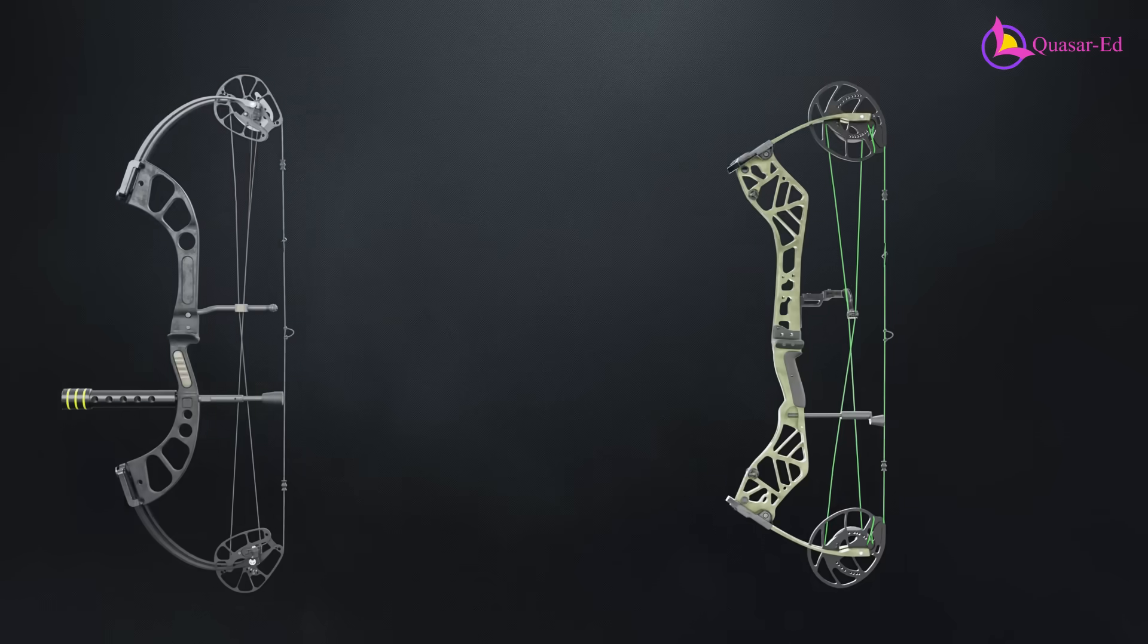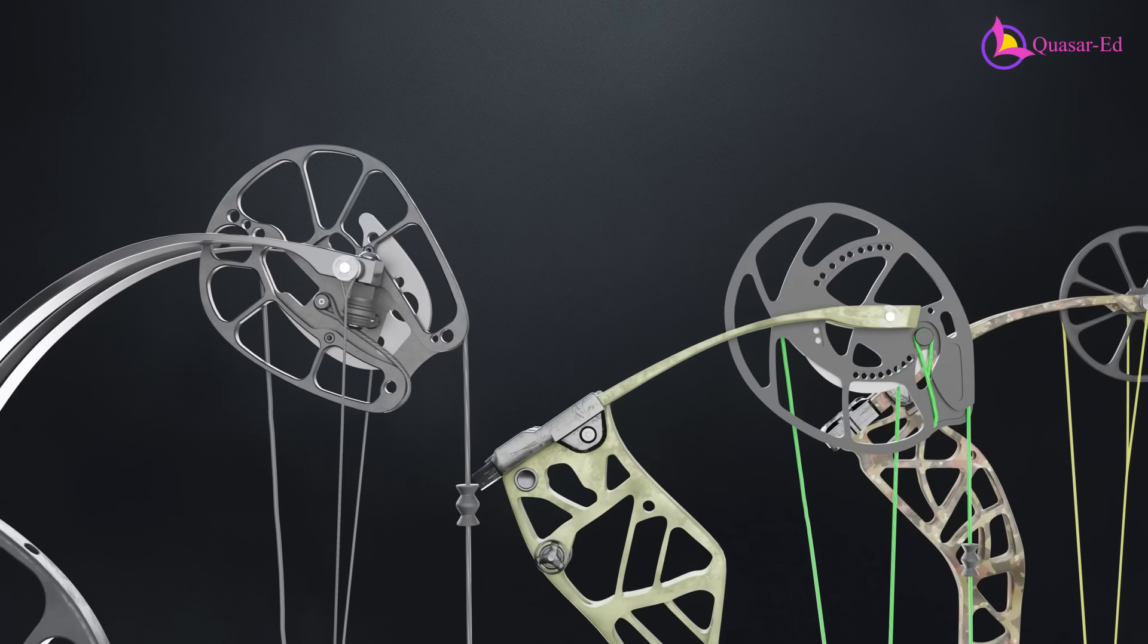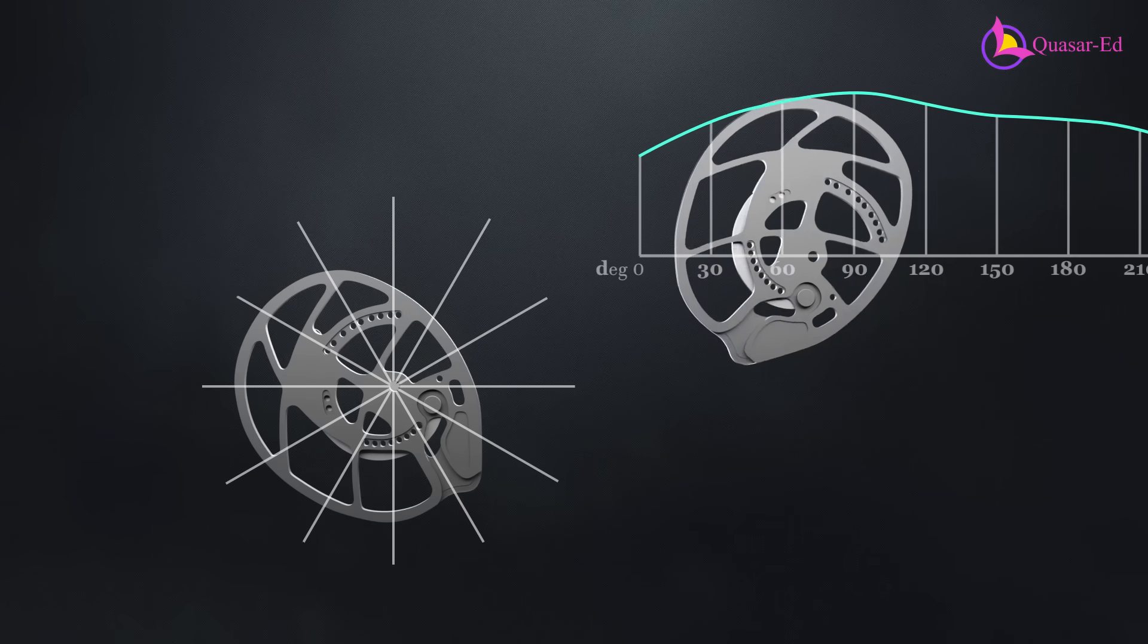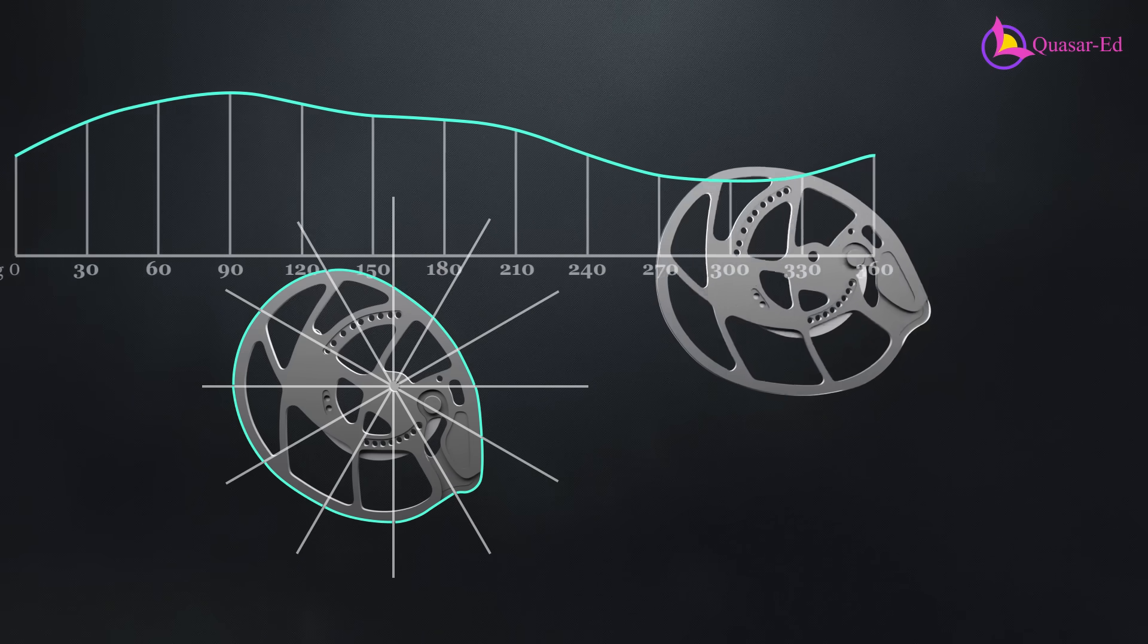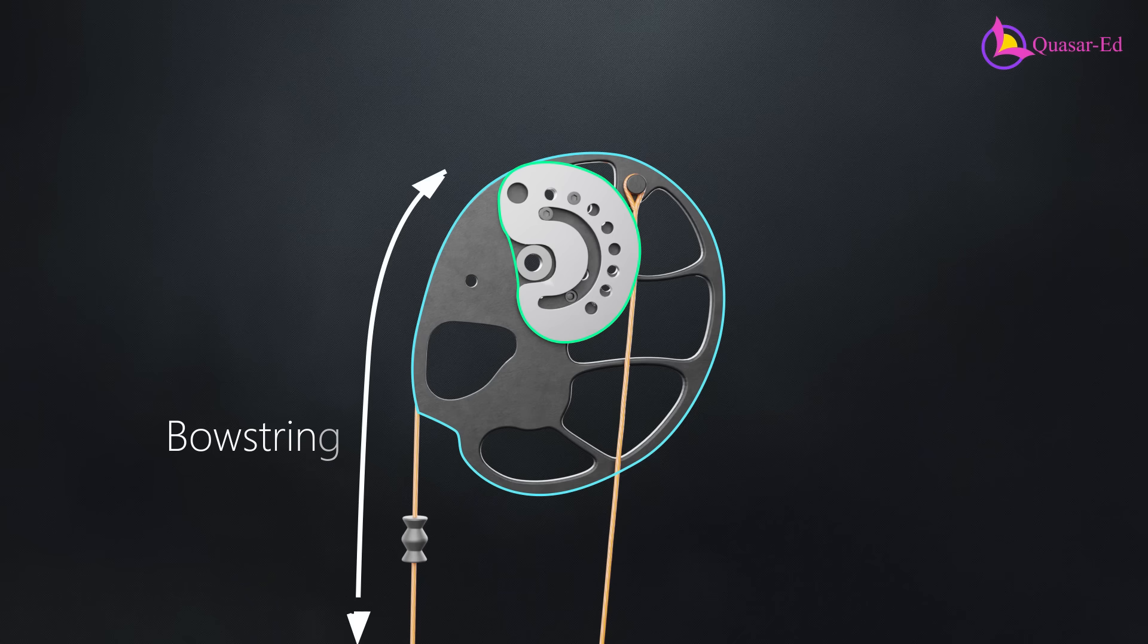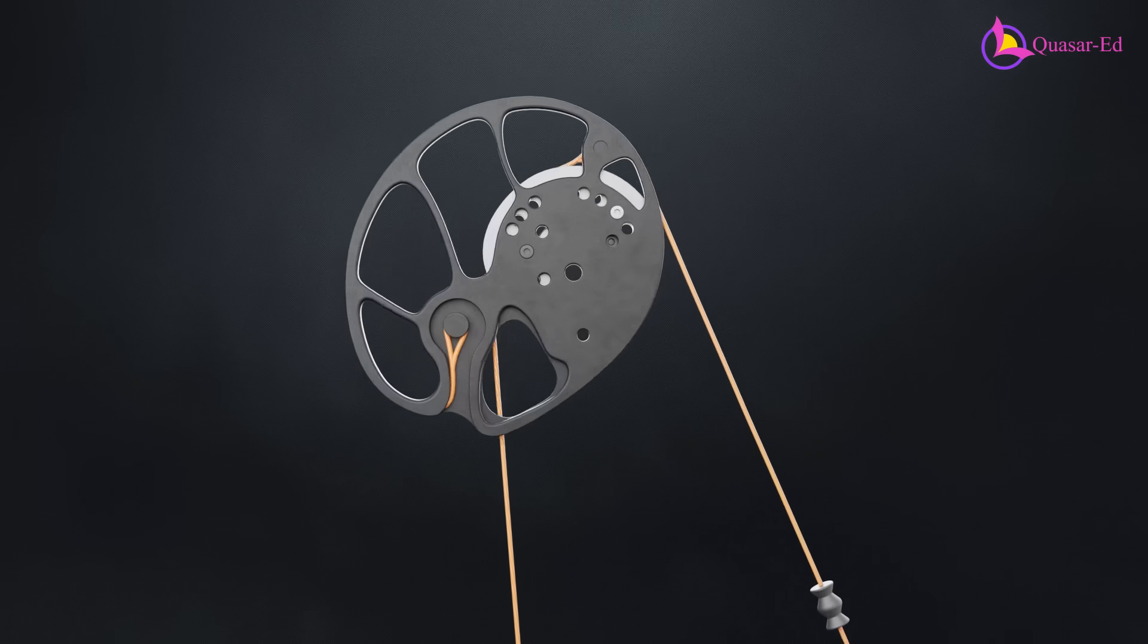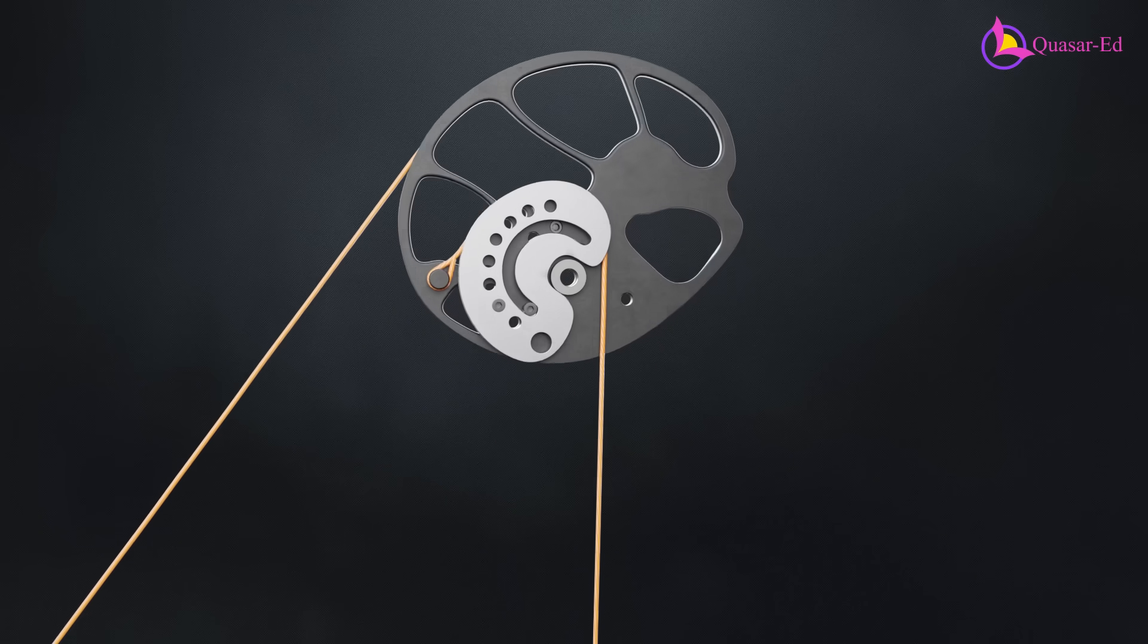Modern compound bows have evolved beyond the simple pulley system of the first compound bow, now relying on cam systems for enhanced performance. Unlike regular pulleys, cams are designed to provide varying displacement throughout their rotation. Each cam in a compound bow features two sets of cam profiles, one controlling the bow string and the other managing the cable system. The bow string wraps around the outer cam profile, and as it is drawn, it rotates the cam, which in turn winds up the bus cable on the inner cam profile.